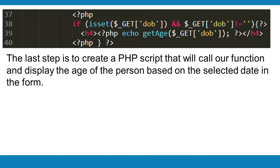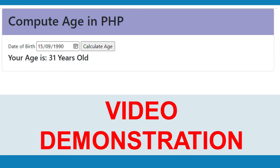The last step is to create a PHP script that will call our function and display the age of the person based on the selected date in the form. Watch the video demo on how to compute age in PHP.